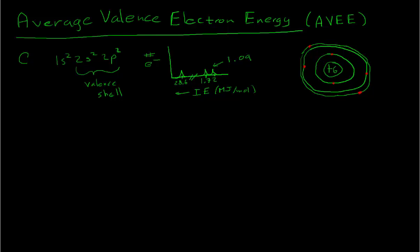Here's the electron configuration for carbon: 1s², 2s², 2p². The valence shell is the n=2 shell, which has two subshells — the s subshell and the p subshell — giving us a total of four valence electrons. If we look at the photoelectron spectrum for carbon, the relative number of electrons is on the y-axis, and ionization energy increases from right to left in megajoules per mole.